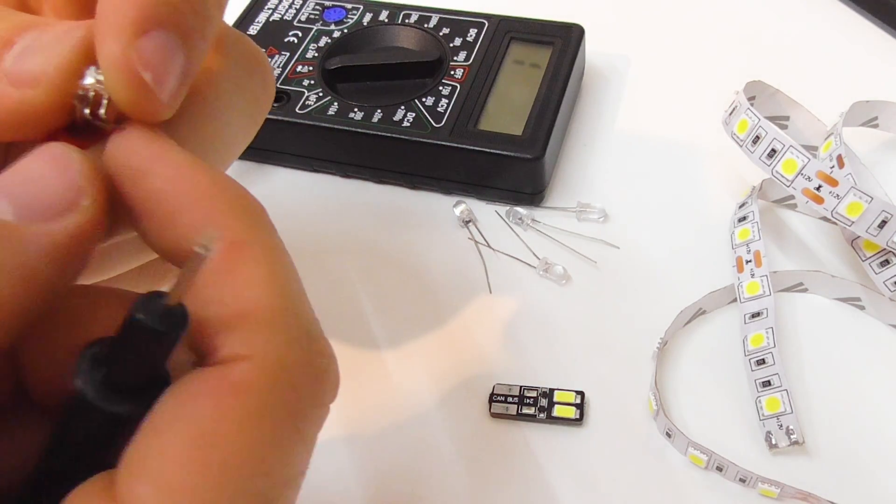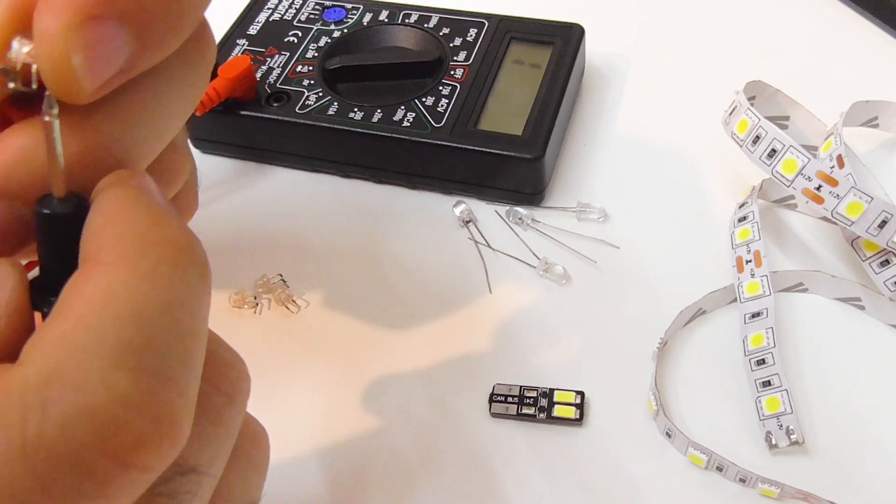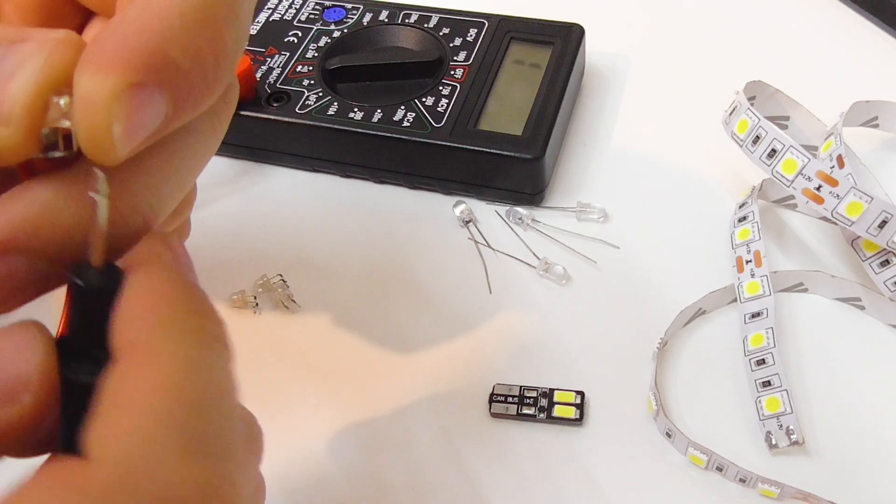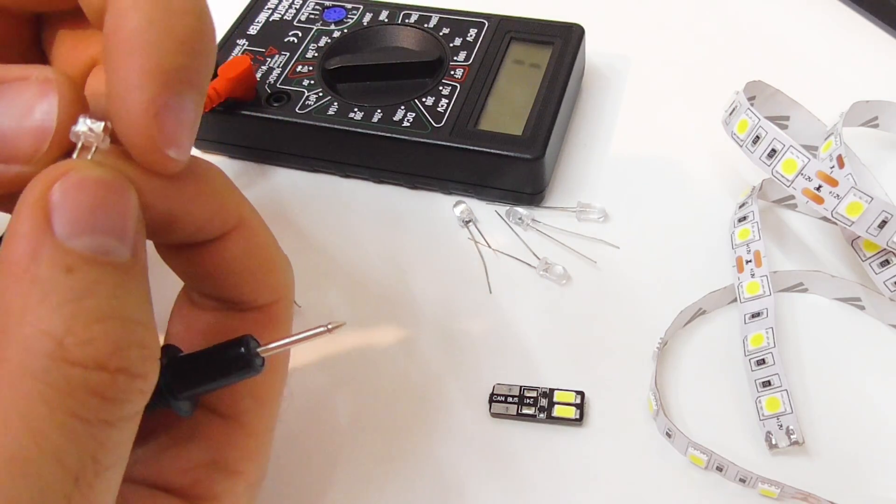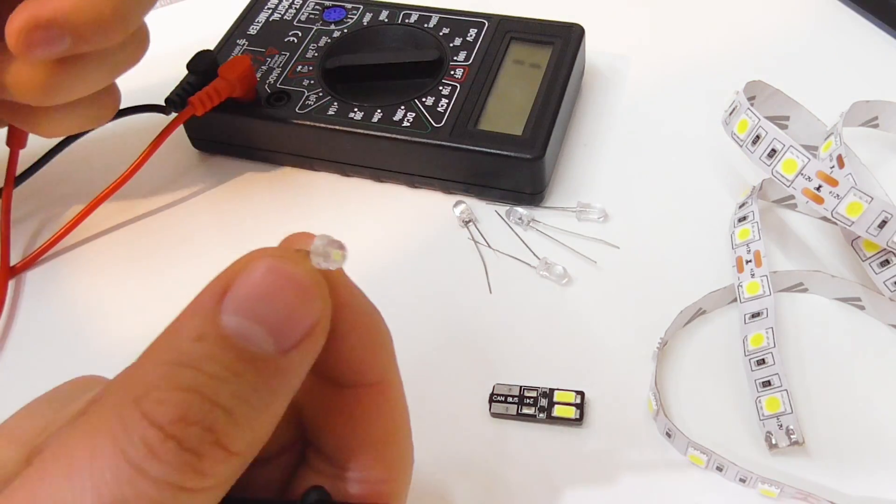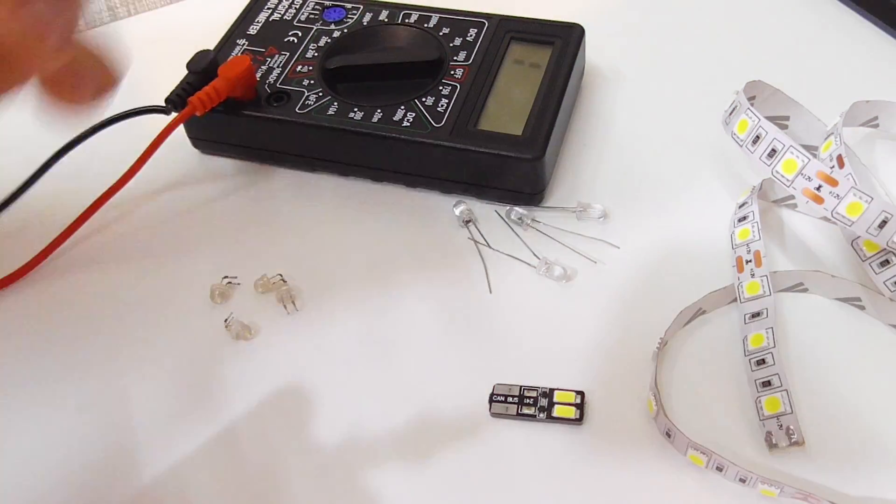So instead of lighting up, this conducts. And if I reverse it, it's conducting in that way also and it's not lighting up. It should not conduct, it should light up, whereas this is conducting. So that's a bad LED.